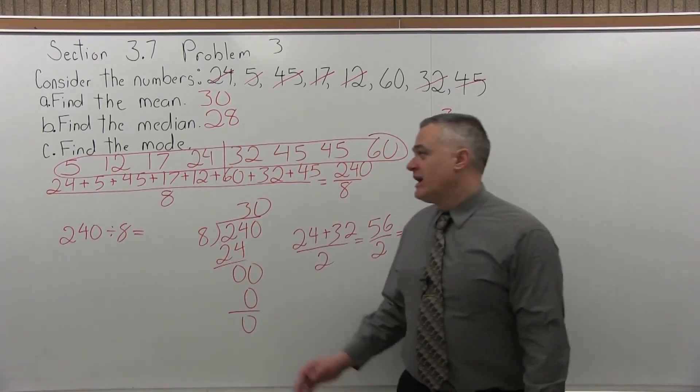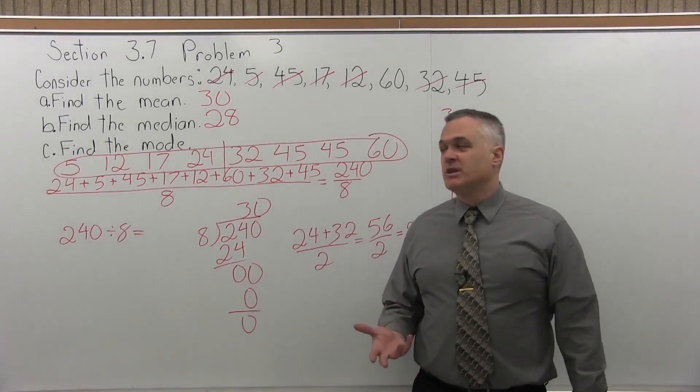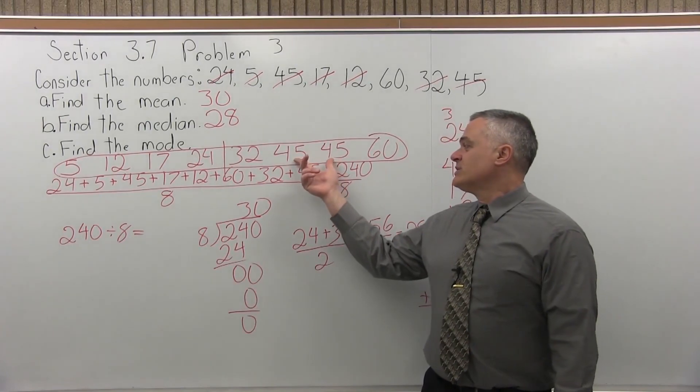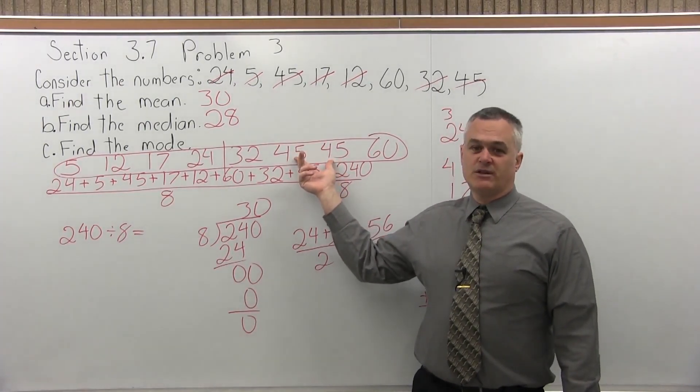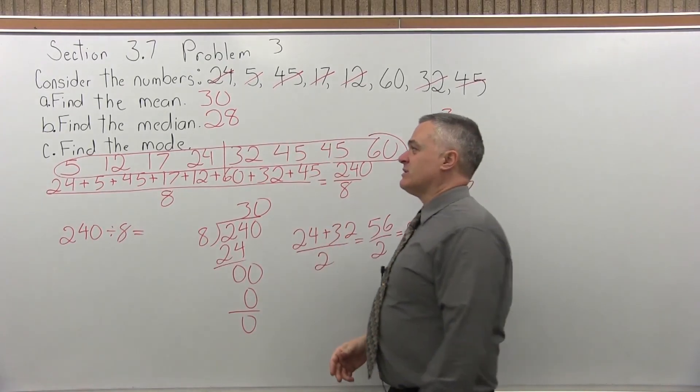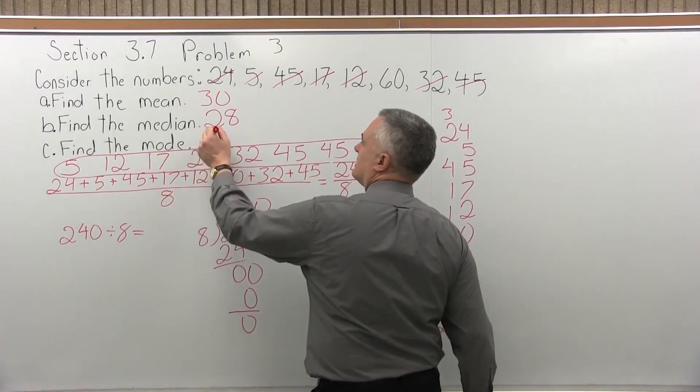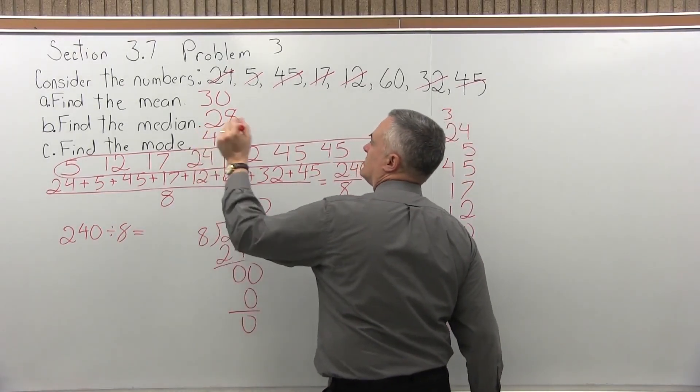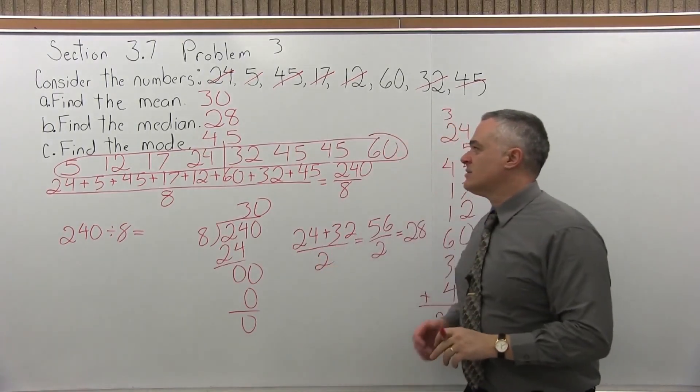Now the mode, the last one left, mode. Mode is the most common number in the list. And especially once we've put the list in order, it's clear what shows up more than anything else, the 45. 45 shows up more than any of the other numbers. So that's the mode. So the mean is 30, the median is 28, and the mode is 45.